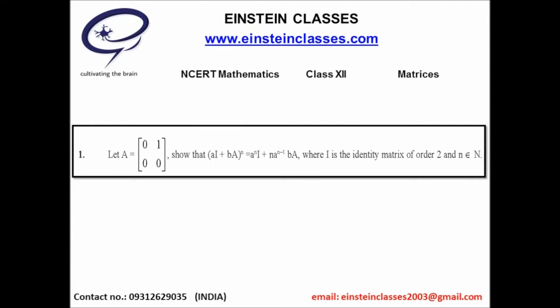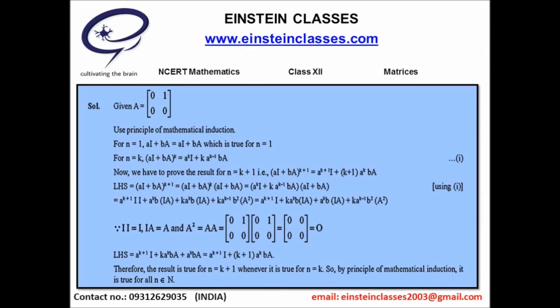Let us discuss the solution in detail. The approach for this question is mathematical induction. For n=1, the statement gives LHS = (aI + bA) and RHS also becomes (aI + bA). Here, small letters a and b are scalars, capital I is the identity matrix (2×2), and capital A is the given matrix in the problem.